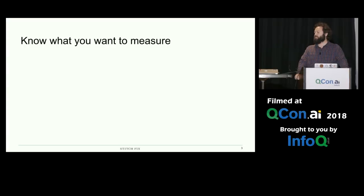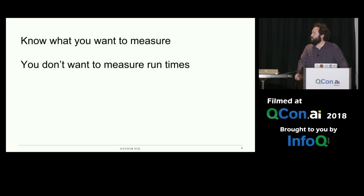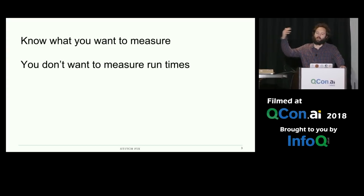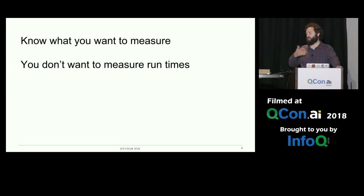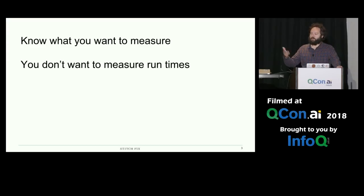The first principle is: know what you want to measure. This is sort of obvious, but you probably don't want to just measure run times — or at least that's not the only thing you want to care about. Any time you're trying to characterize the performance of something, you'll be measuring run times somehow. But you don't want to stop at just saying the job runs faster or the job runs slower. You actually want to boil that down into something more meaningful.